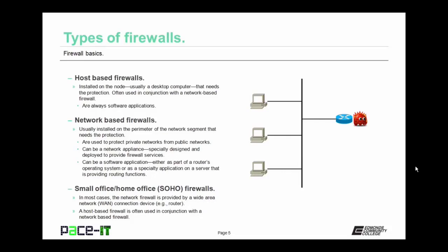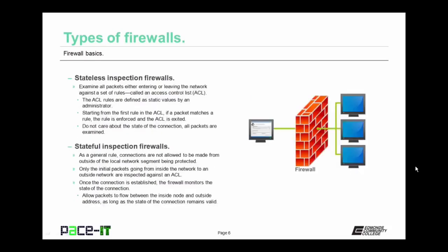It's time to move on to small office, home office firewalls. In most cases, the network firewall is provided by a wide area network connection device — most often the main firewall is provided by the DSL modem or the cable modem. In conjunction with this, a host-based firewall is often used with the network-based firewall, providing a bit more protection and allowing for more granular configuration of the firewall protection. There are stateless inspection firewalls. These examine all packets either entering or leaving the network against a set of rules called an access control list, or ACL. The ACL rules are defined as static values by an administrator, and all packets are examined starting with the first rule. Stateless inspection firewalls do not care about the state of the connection — they only care about the packets.